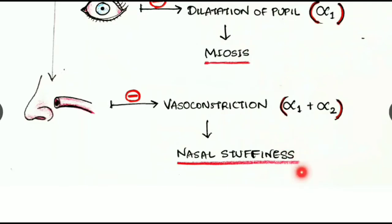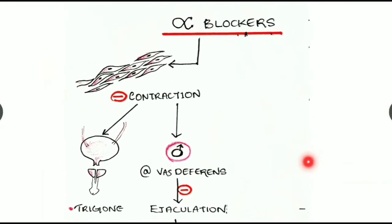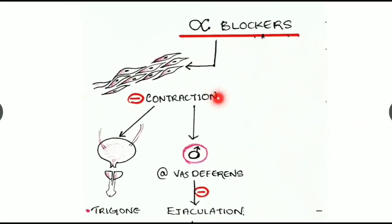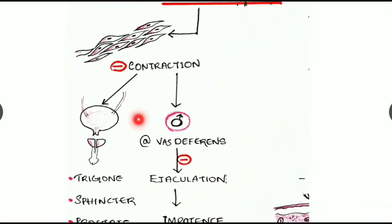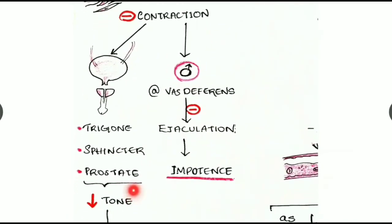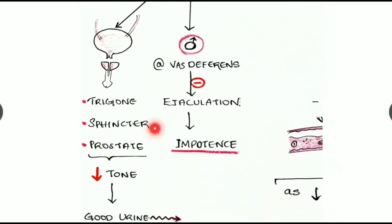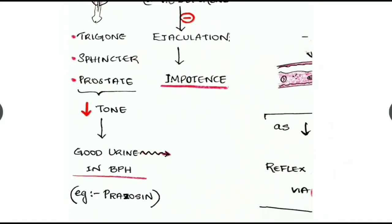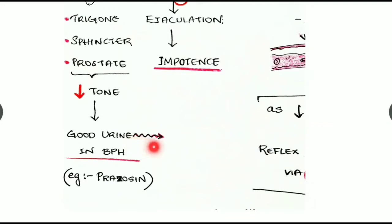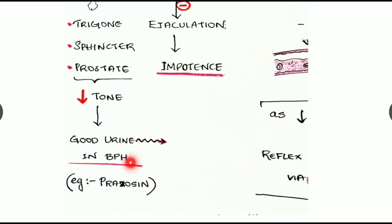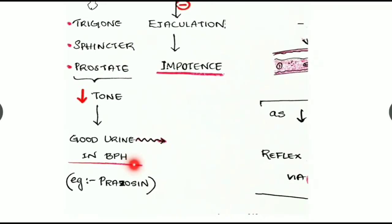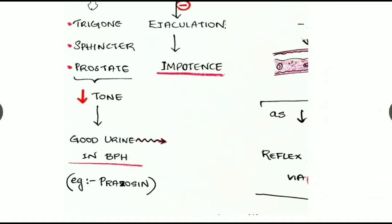This vasoconstriction inhibition in the nose causes nasal stuffiness. Alpha receptors in smooth muscles throughout the body — when inhibited — reduce smooth muscle contraction. In the urinary bladder, this inhibition reduces tone in the trigone and sphincter as well as the prostate, resulting in good urine flow.